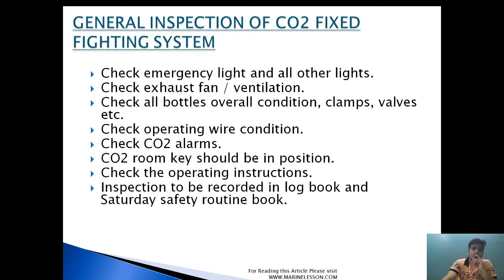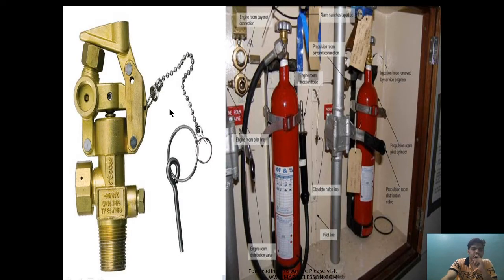Check the CO2 alarm — open the cabinet door and confirm the alarm activates. The CO2 room key should be in position. Check the operating instructions. Inspection should be recorded in the log book and the Safety Training Book. Also check the lock pin — when the CO2 system is not in operation or being transported, this lock pin is placed to prevent accidental puncturing. Each pilot bottle has the capability to puncture the bulk CO2 system.